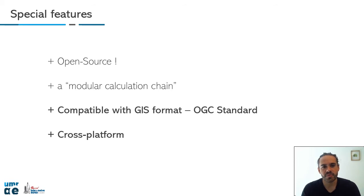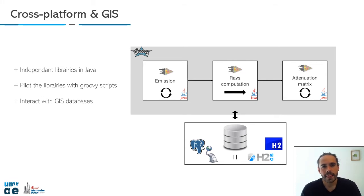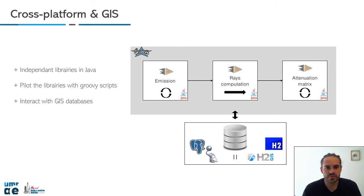Noise modeling is cross-platform because it was developed in Java, which is a cross-platform language you can use with Android, Mac OS, Linux, or Windows. You can also pilot this Java library and create a link between the libraries and GIS databases — both PostGIS and H2GIS — which are databases really useful for manipulating spatial features, as they already include many spatial functions.